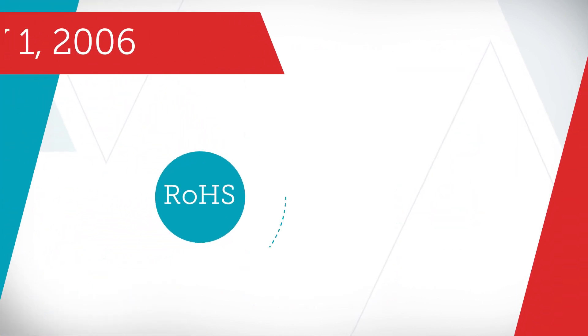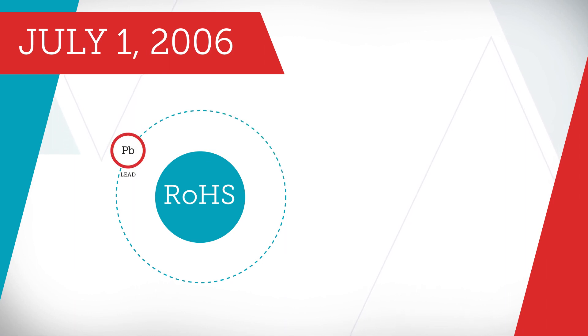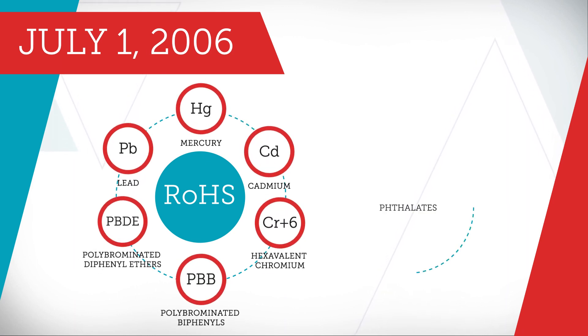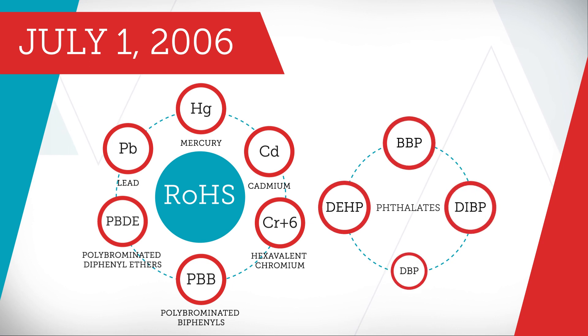RoHS came into effect on July 1, 2006, initially regulating the use of six substances. Its scope expanded in July 2019 to include four new phthalates.